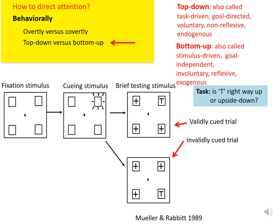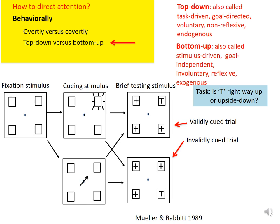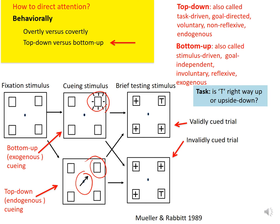We can also cue in an alternative way. Instead of a flash at a box, we can use an arrow at the fixation point pointing to that box. Cueing by a flash is called bottom-up or exogenous cueing — it gives information directly at a candidate target location. Cueing by an arrow is called top-down or endogenous cueing — it gives information indirectly, not at a candidate target location. Both types of cueing can be valid or invalid. With this study, we can compare the properties of bottom-up and top-down guidance of attention by the corresponding cueing methods.